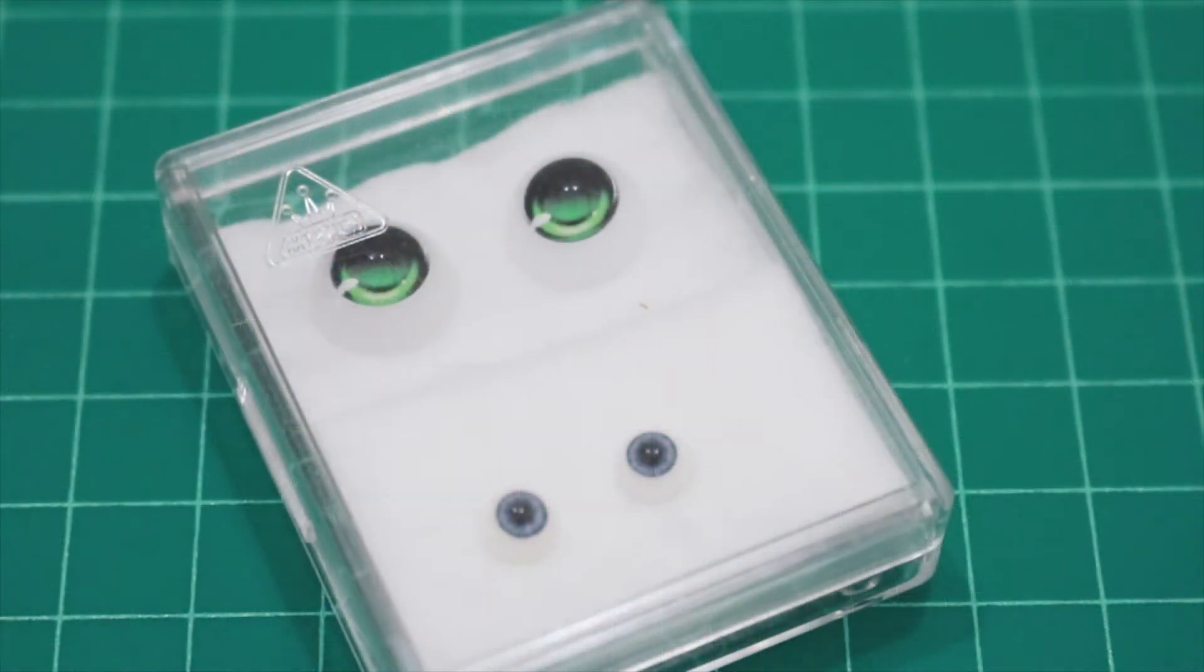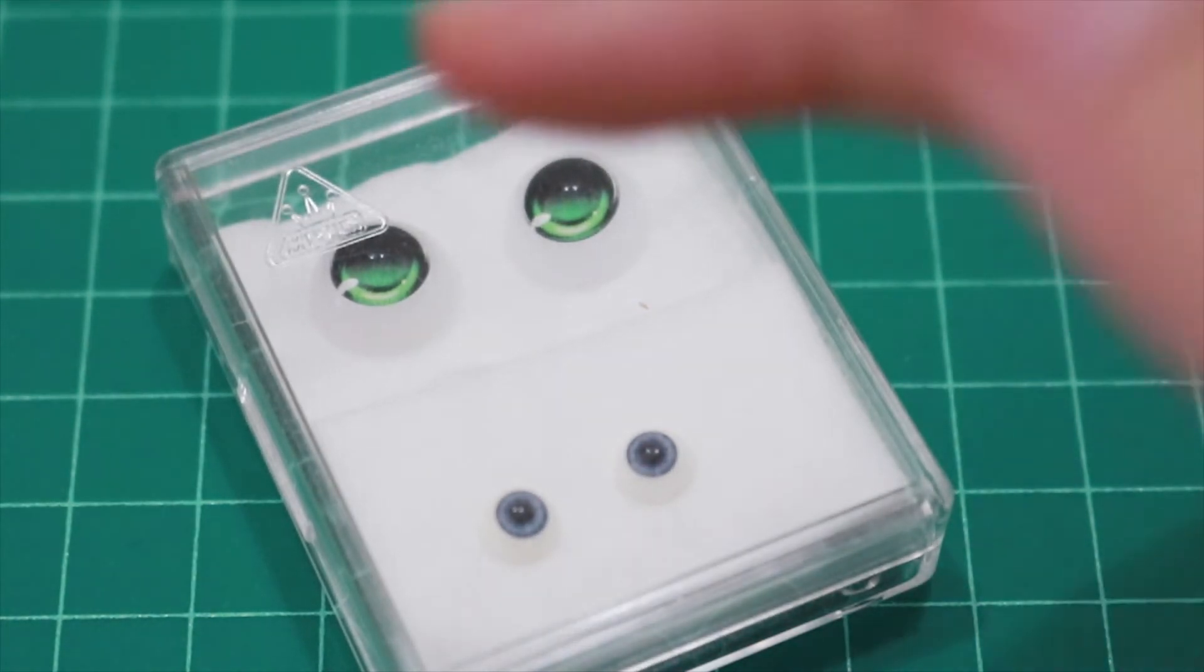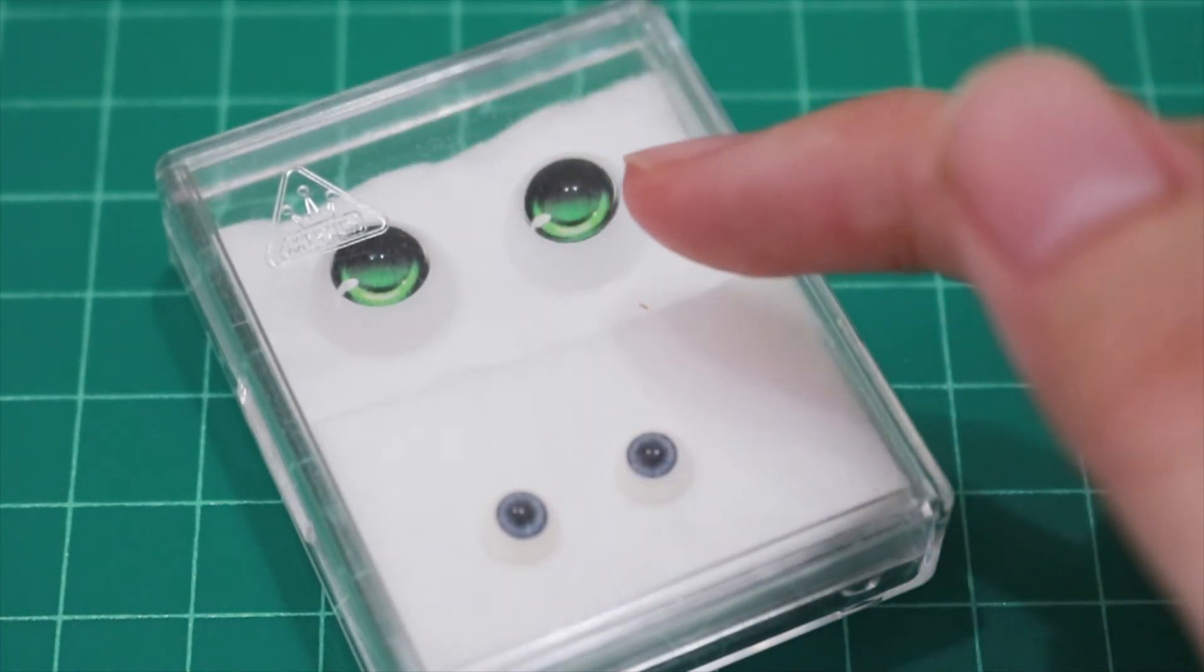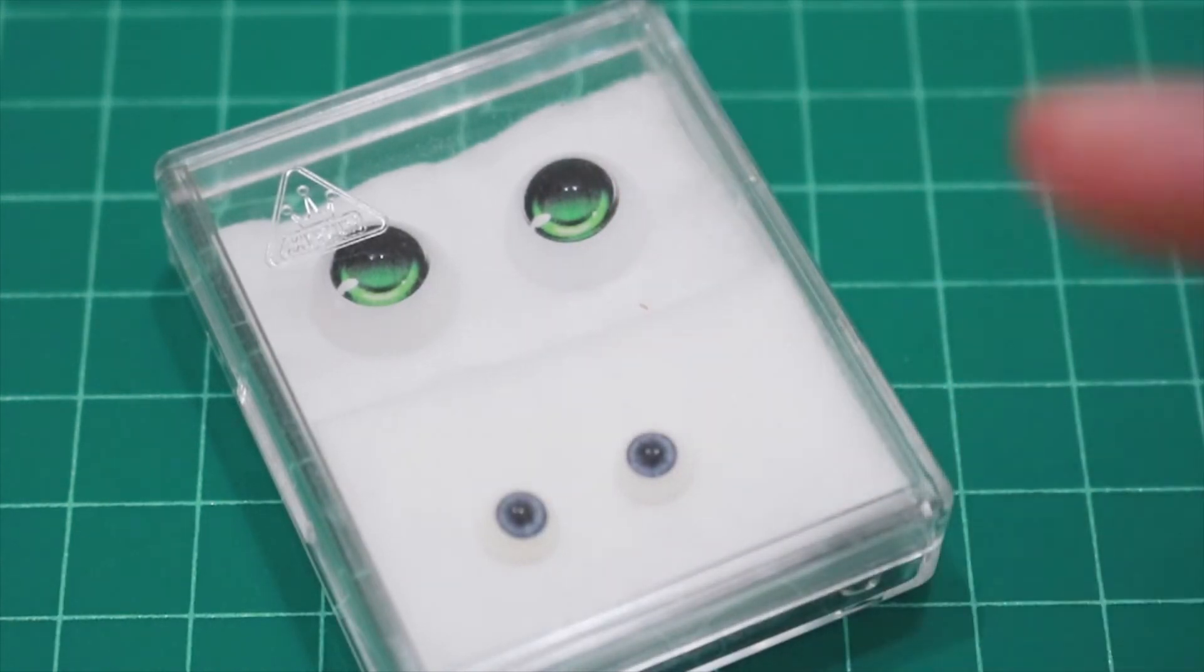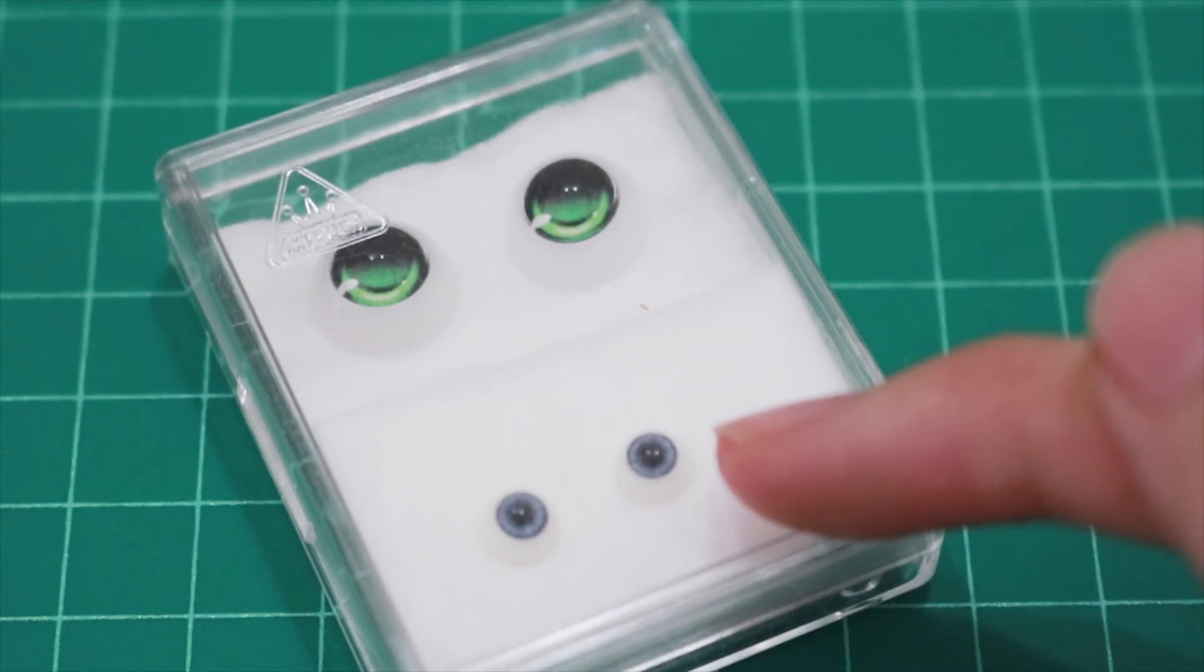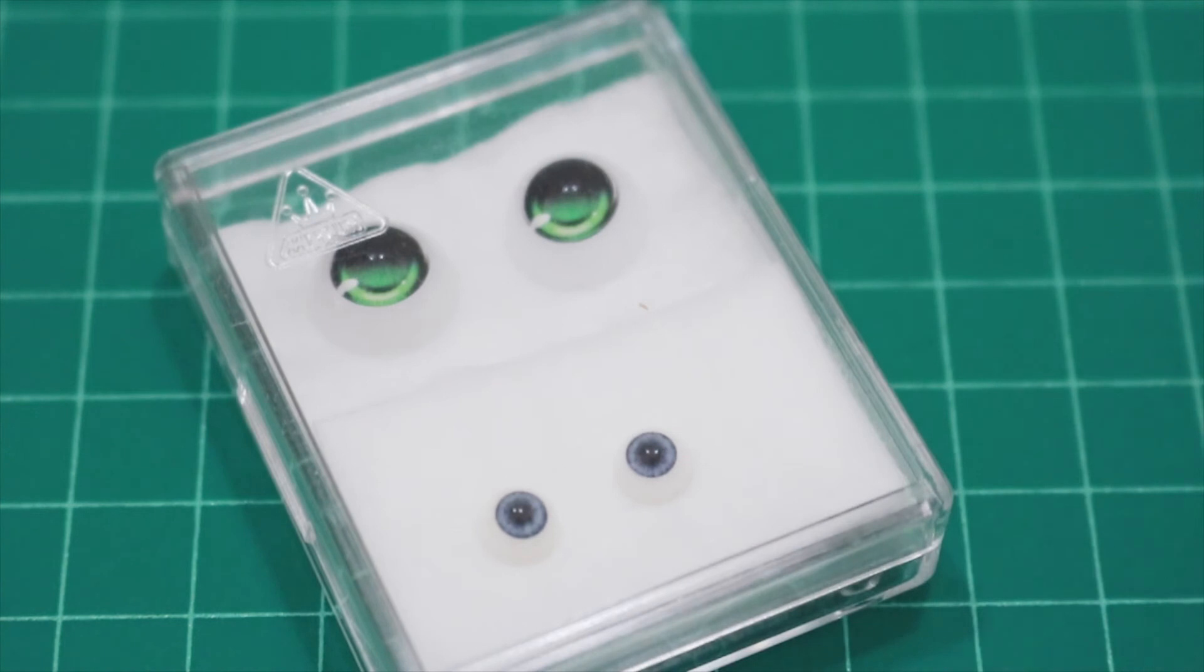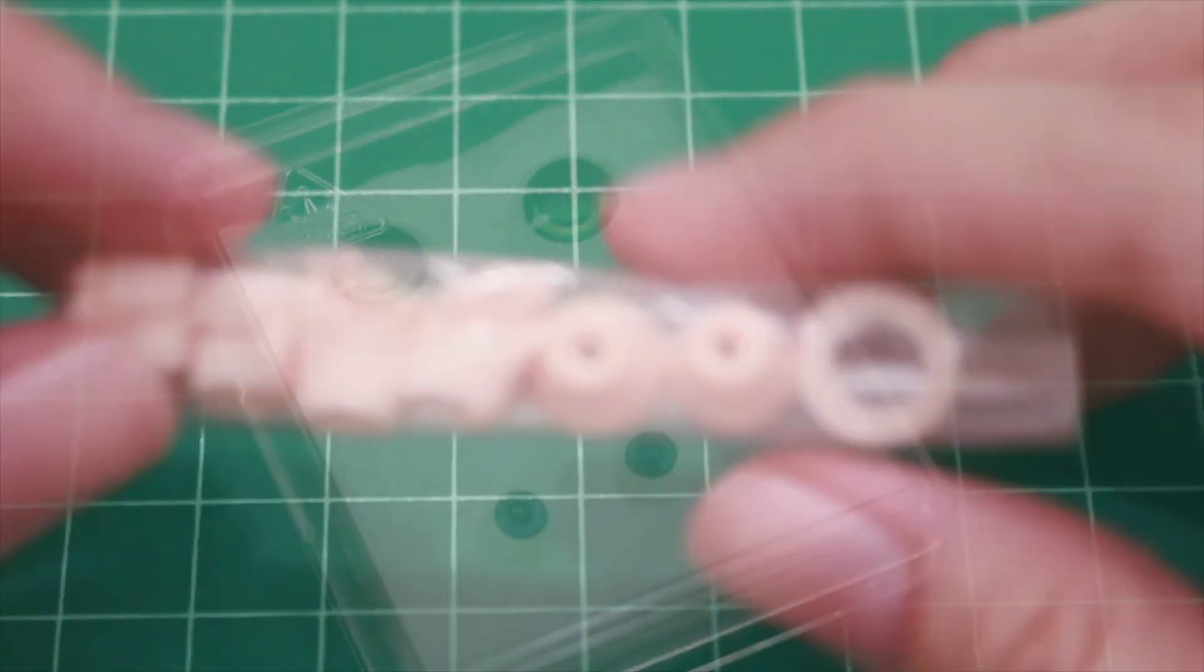I almost forgot to show you the eyes. Each of them have a pair. The bigger green one is from my 11cm, and smaller blue one is from my 27cm.